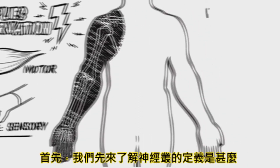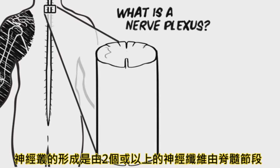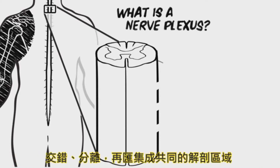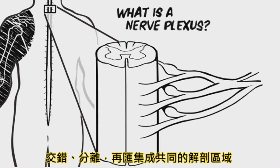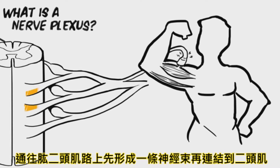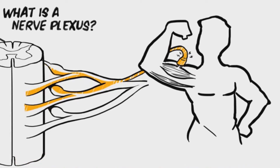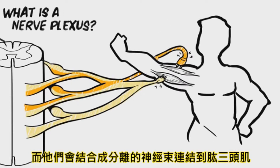Let's begin by defining what a nerve plexus is. A nerve plexus is formed when nerve fibers from two or more spinal segments intermingle and then segregate in order to travel together to a common anatomical region. For example, fibers from two or three spinal segments that are all going to the biceps brachii muscle may join together to form a single nerve bundle that travels to the biceps. Other fibers from these same spinal segments may be destined for the triceps brachii muscle, and they will join together to form a separate nerve bundle that travels to the triceps.